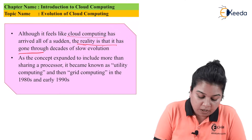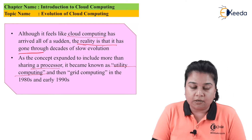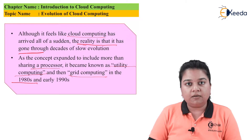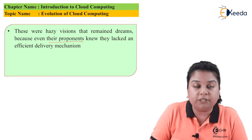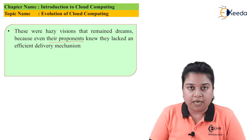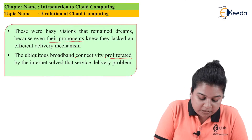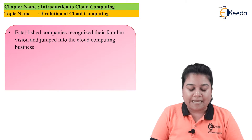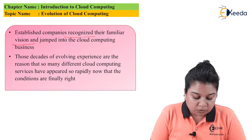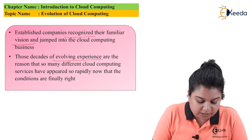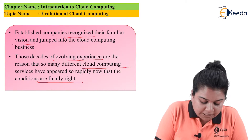As the concept expanded to include more sharing of a processor, it became known as utility computing and then grid computing in the 1980s and early 1990s. These were hazy visions that remained dreams because even their proponents knew they lacked an efficient delivery mechanism. The ubiquitous broadband connectivity proliferated by the internet solved that service delivery problem. Established companies recognized their familiar visions and jumped into the cloud computing business. Those decades of evolving experience are the reasons that so many cloud computing services have appeared so rapidly now that conditions are finally right.